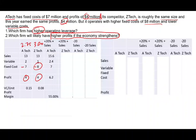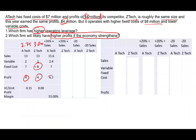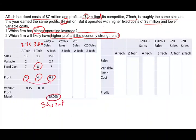If we increase A-TAC's sales of $13 million by 20%, we get $15.6 million. Variable cost also increases by 20% to $2.4 million. Fixed cost stays the same. The profit becomes $6.2 million. Sales went up by 20%, but the profit went from $4 million to $6.2 million — an increase of 55%.